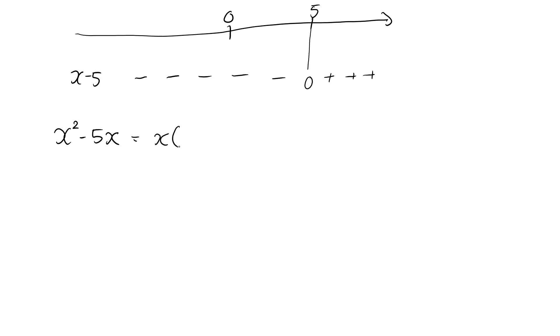I can take out an x, that leaves me with an x from the x square, and it leaves me with the minus 5 from the minus 5x. Now I have a factored expression, which cannot be factored further.